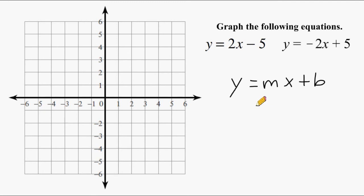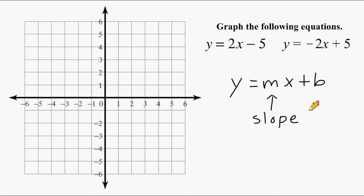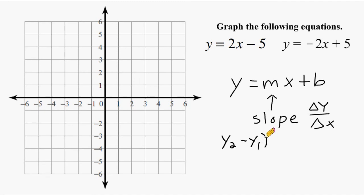Let's look at the different parts to this equation. m right here stands for slope, and slope is the change in y over the change in x. So slope is a rate of change. This value is defined by change in y over the change in x. A lot of times you may see this as y2 minus y1 over x2 minus x1.